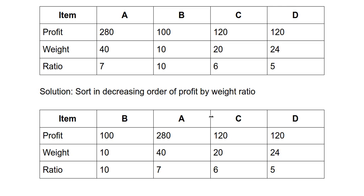Now I will have 10 kgs remaining. So now I check the weight of c, which has the third highest ratio. Now c has a weight of 20, so it cannot be included as a whole. So now we include a fraction of c in our bag. So we include half of c in our bag. So in total, if we calculate the profit, it will be 100 plus 280 plus 60, which is a total of 440 rupees.